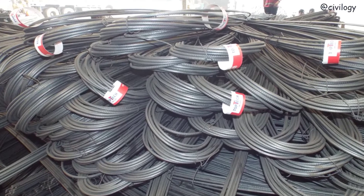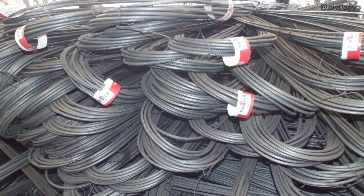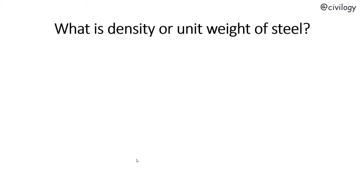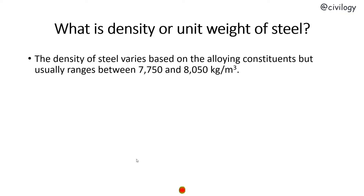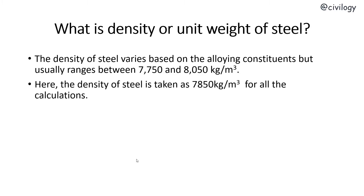Before we get into the derivation of the formula, there are some important terms we have to know. What is the density or unit weight of steel? The density of steel varies based on the alloying constituents, but usually ranges between 7,750 to 8,050 kg per meter cube. Hence, the density of steel is taken as 7,850 kg per meter cube for all calculations.